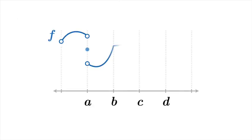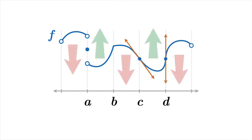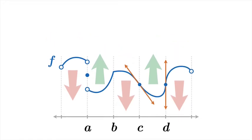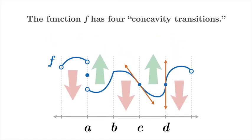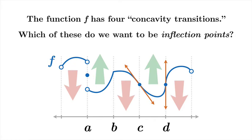Here's the graph of a function. And we'll notice that the concavity changes across each of these four arguments. It's reasonable to say that the function f has four concavity transitions. And now we ask, which of these do we want to be inflection points?